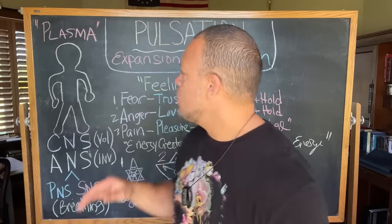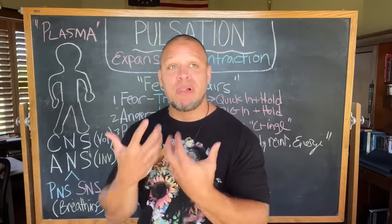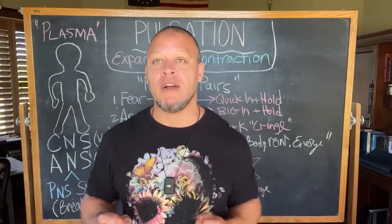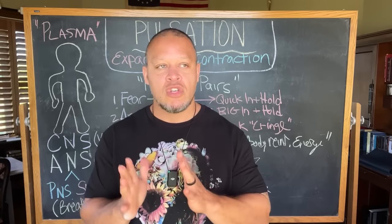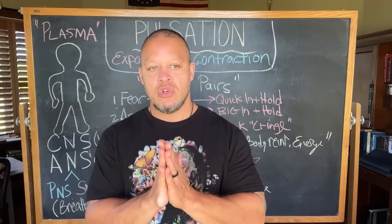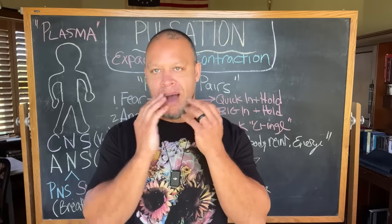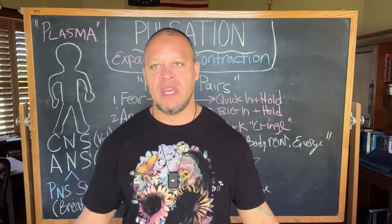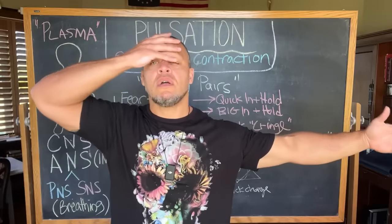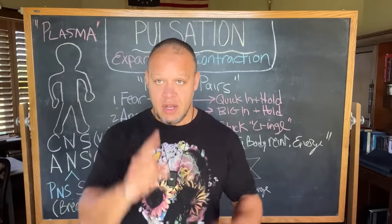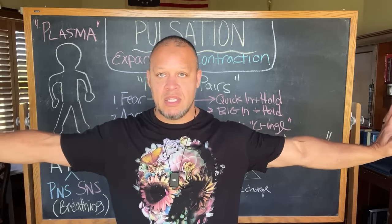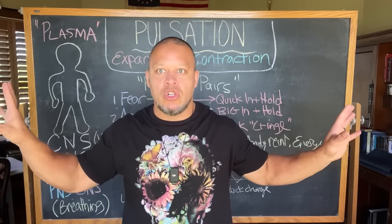That is an expansion of plasma, and the plasma will expand in different areas — expand down here, expand up here. Mostly it expands to the most sensitive parts of the body: mouth, head, hands, genitals, feet. The five points that make a human being — that's where it'll expand. And also it's where it will contract.